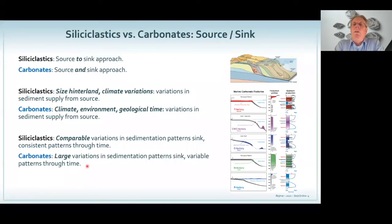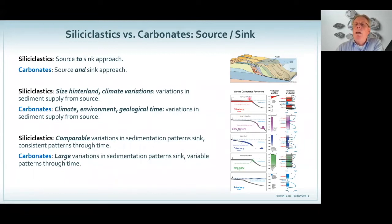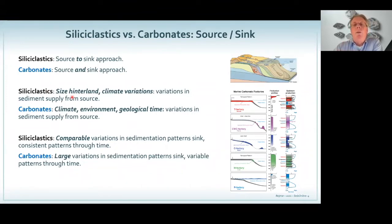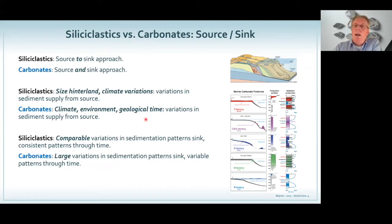When I compare siliciclastics and carbonates, it's all about the source and the sink. When I look at siliciclastics, people use the source-to-sink approach — rivers erode and transport sediments into the open ocean. But in carbonates, you produce stuff and at the same time you deposit it. So carbonates have a source-and-sink approach. With clastics, it depends on the size of the hinterland, climate variations, how much erosion takes place — these things steer your variation in sediment supply. When you go to carbonates, it's climate, environment, how the biota is feeling, and what geological time you're dealing with.